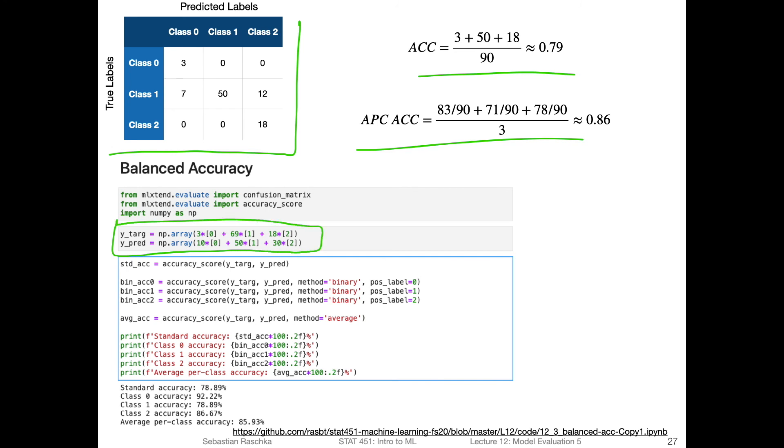Here I'm just recreating this confusion matrix. So if you call confusion matrix on these two arrays, what you would get is this confusion matrix. Here for reference, that's the standard accuracy score, which is 78.89%, so averages 79%. And here I'm computing these binary accuracies, which correspond to these ones here. These are the binary accuracies - approximately 92%, 78.8% and 86.68%. And if you would average those, what you would get is approximately 86%. So you can just add them up and divide by three.